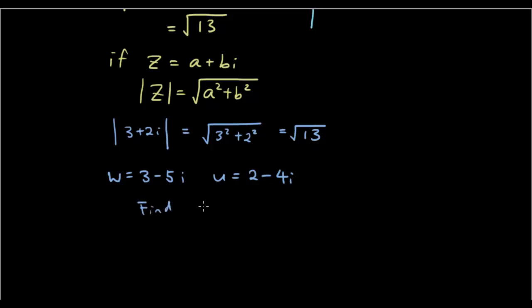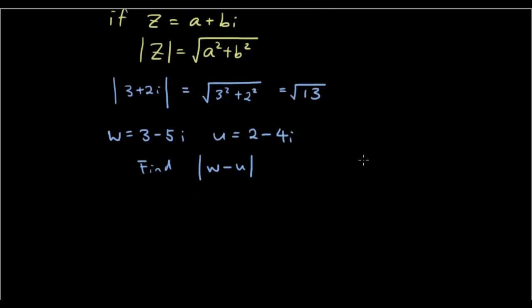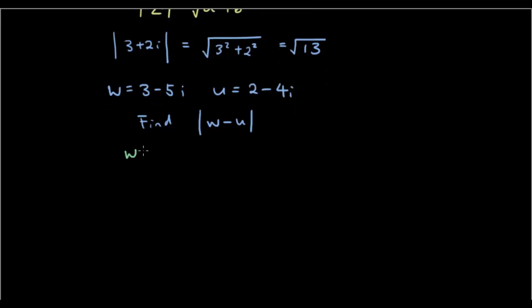So what you would do is you would find what w-u is first, so w-u is 3-5i minus 2-4i, which is 3-5i minus 2 plus 4i, so it's 1-i.